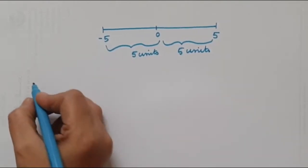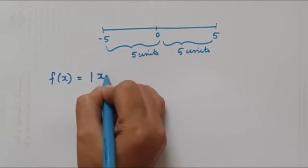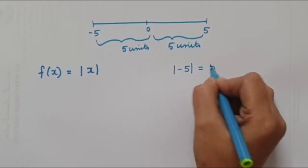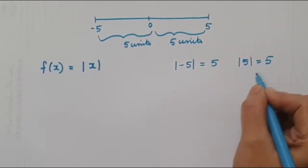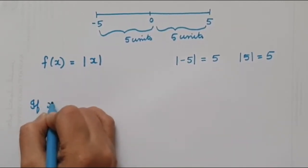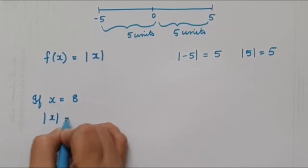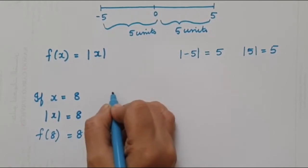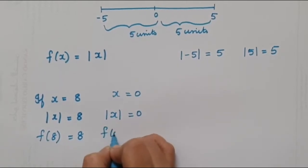The modulus of a function is written as f(x) = |x|. If it is negative 5, then the modulus of negative 5 will be positive 5. In the same way, modulus of 5 will also be 5, because it is just the distance — we are not worried about the direction. Now if x = 8, then |x| = 8, that is f(8) = 8. If x = 0, then |x| = 0, so f(0) = 0.